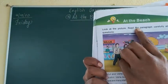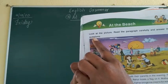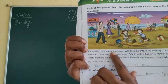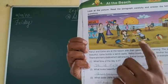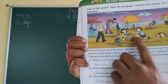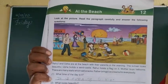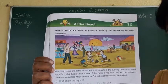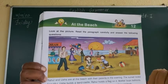Now, picture reading: Rahul and Usha are at the beach with their parents in the evening. Rahul and Usha are with their parents outside on the beach. Do you know beaches? Have you seen any beach? There is a Juhu Beach in Mumbai.